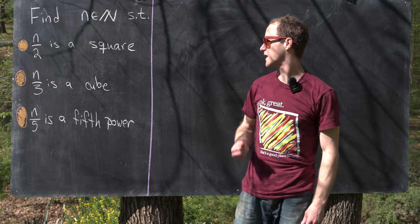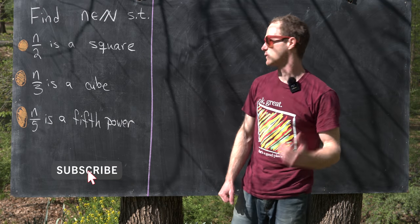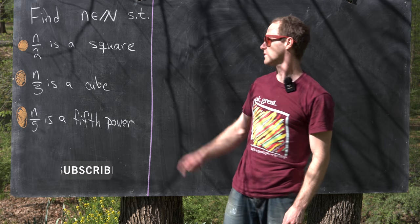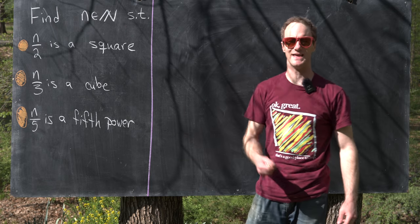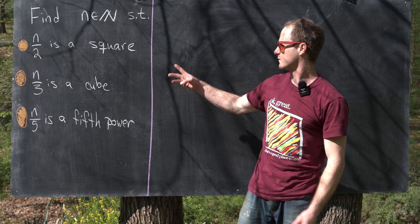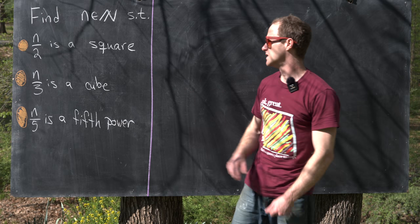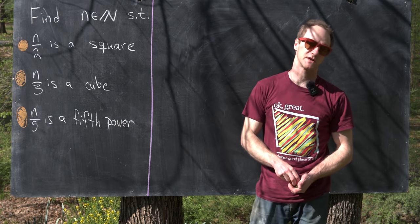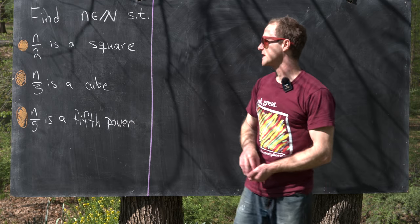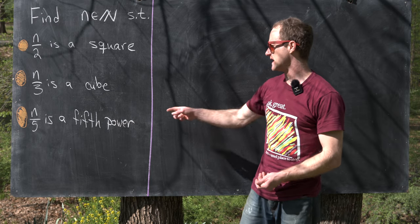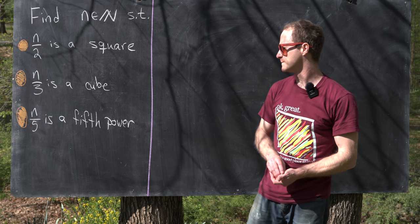Here we're going to look at a nice and quick number theory problem. Our goal is to find an example of a natural number, which we'll call n, satisfying the following three conditions: n over two is a perfect square, n over three is a perfect cube, and n over five is a perfect fifth power.